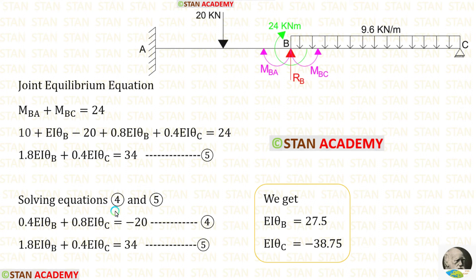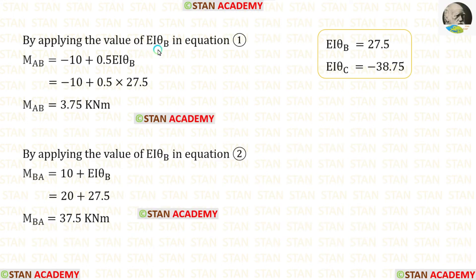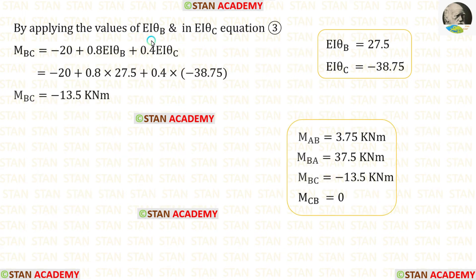Let us use a calculator to solve equations 4 and 5. If you do not know how to solve two equations on the calculator, see the description below — there is a link to a video. Solving the equations gives the values of EI·theta_B and EI·theta_C. Applying the value of EI·theta_B in equation 1 gives M_AB, in equation 2 gives M_BA, and applying both EI·theta_B and EI·theta_C in equation 3 gives M_BC. We have now calculated all the moments.